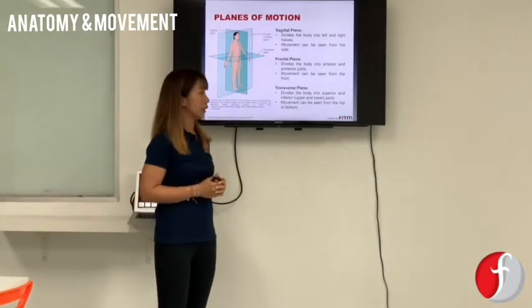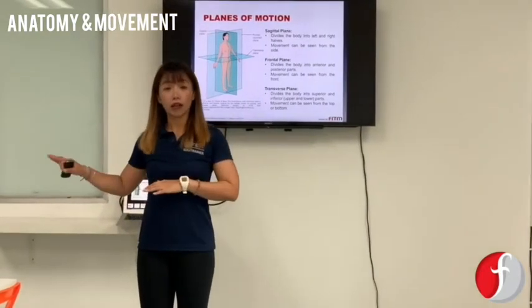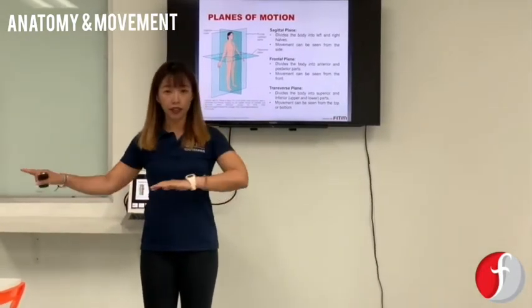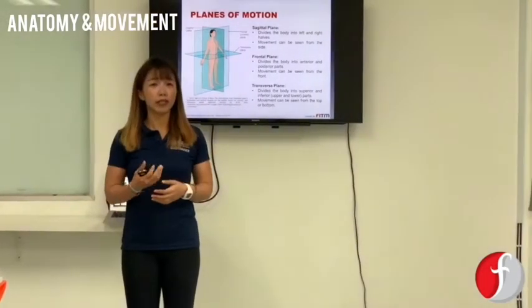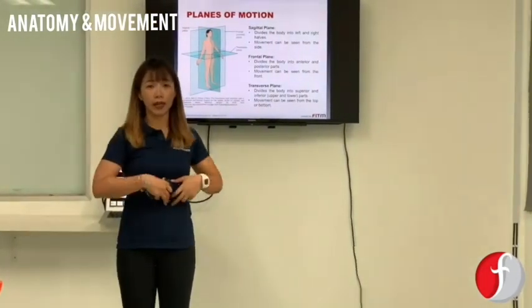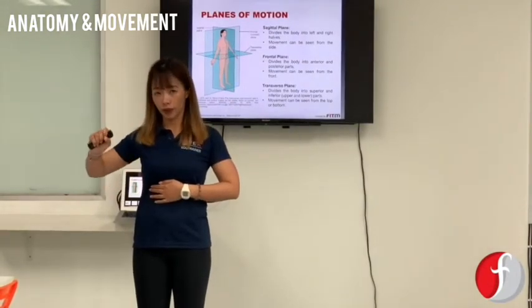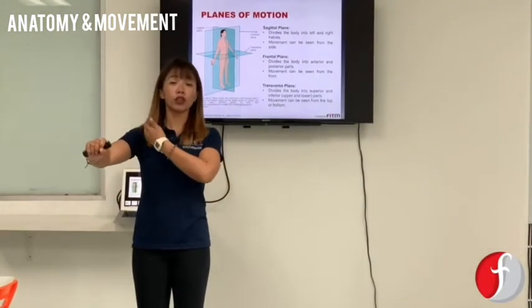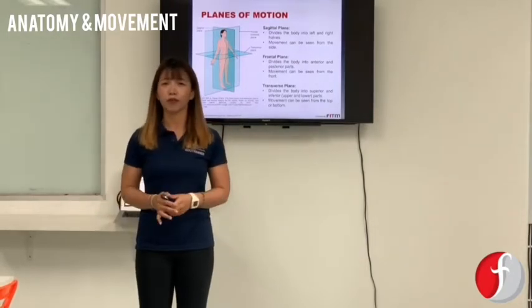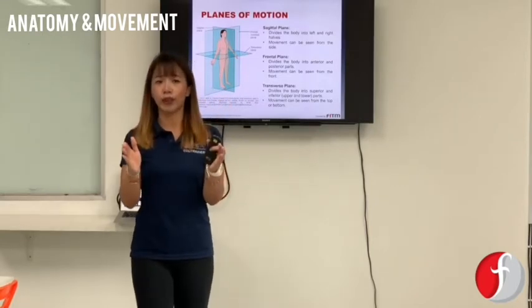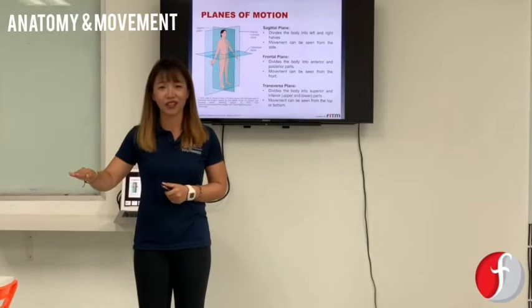And finally, we've got the transverse plane. Now the transverse plane — imagine the wall now cuts you in half horizontally. Movements like rotational movements will see your spine move in a transverse plane. If you do a push-up, your shoulder joint will also be in a transverse plane. Any movement that doesn't occur in the sagittal plane or the frontal plane most likely is going to be in the transverse plane.